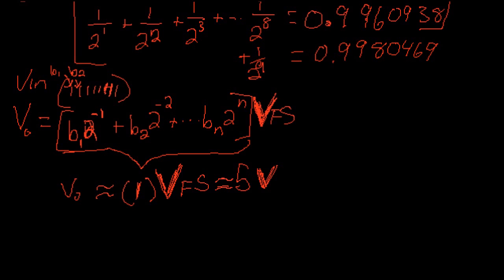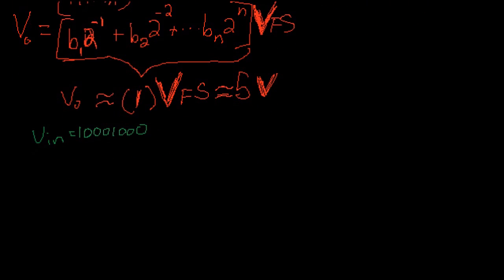Let me change it up. Let's say our word was 1, 0, 0, 0, 1, 0, 0, 0. So, V input in binary is that — that's what's stored in our computer's memory — and we want to convert that into its corresponding voltage. We're concerned with which bits are 1, because if a bit is 0, that whole term goes to 0. So the only bits we care about are the ones that are 1.